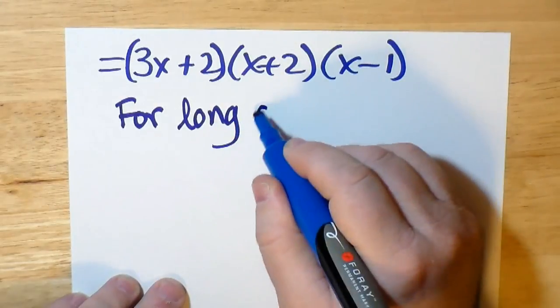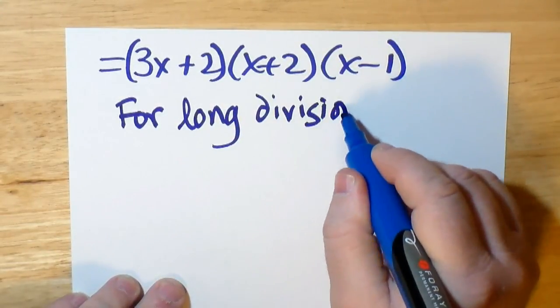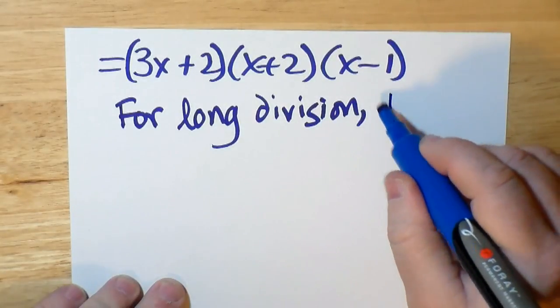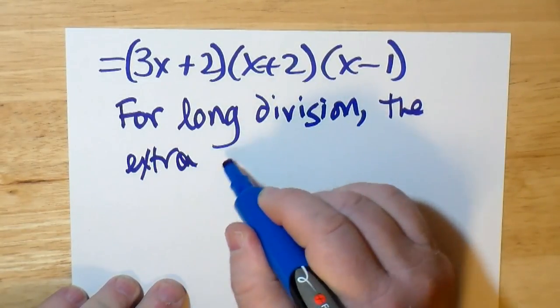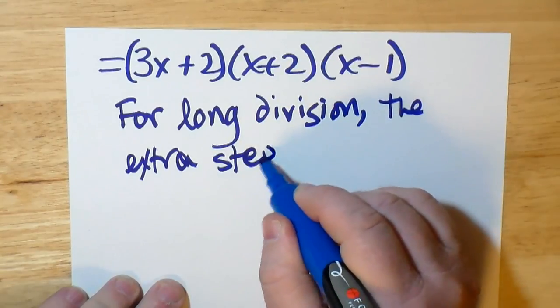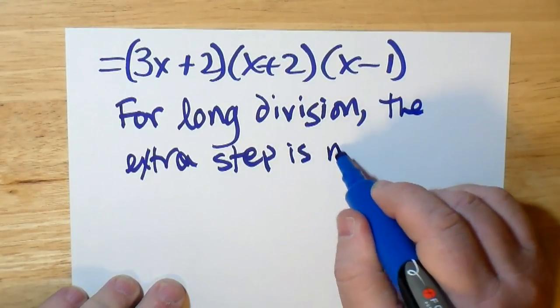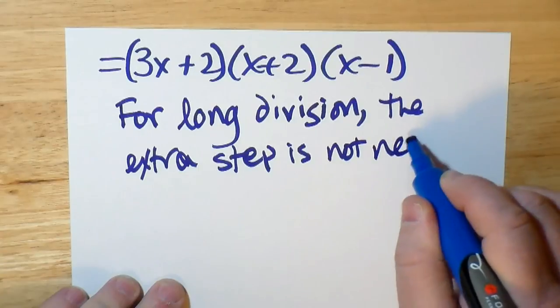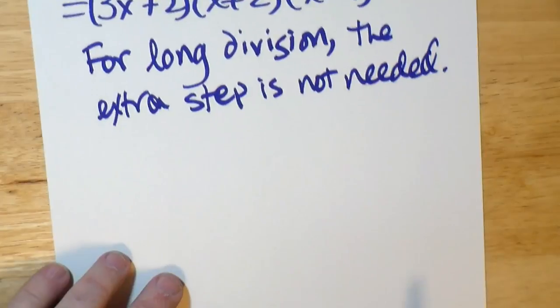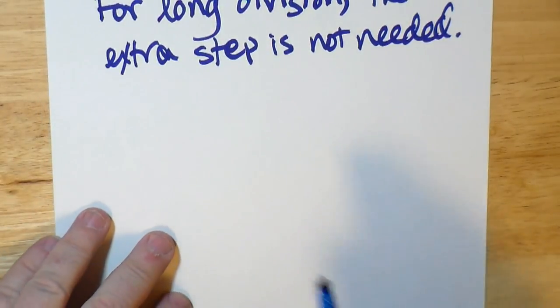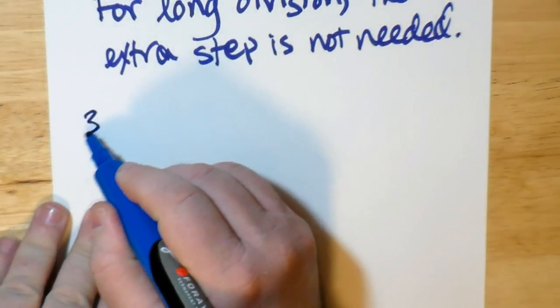Now for comparison, we're going to do a bit of long division. You're going to see that for long division, that last step about dividing the second factor and multiplying the first factor by the same number can actually be avoided. We don't even need it. The long division works just as it is.